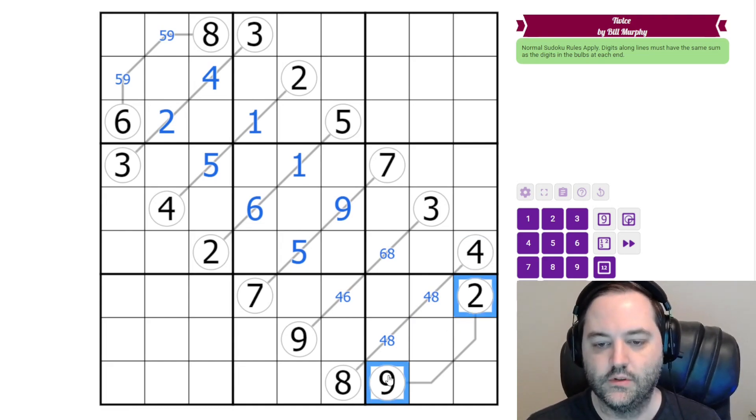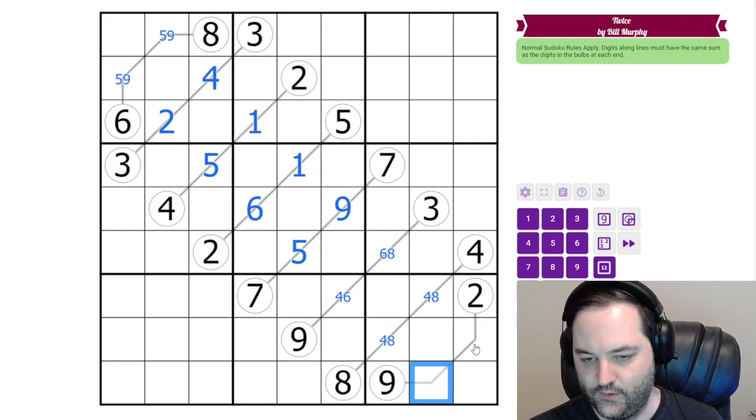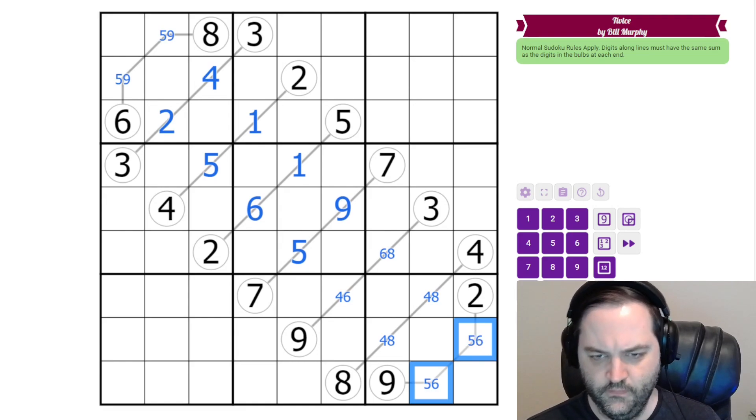And here we have two and nine which is eleven. There are four ways to make eleven in two cells. One of them is two nine. One of them is three eight and one of them is four seven. So those are ruled out. We have five six instead.